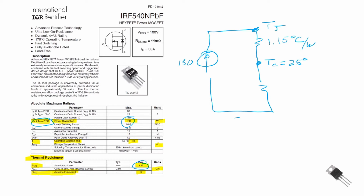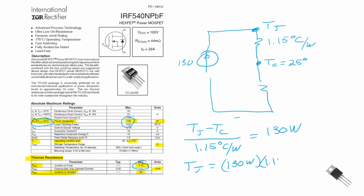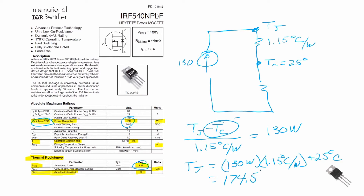We can solve this equation. We see that the temperature in the junction minus the temperature in the case, divided by the thermal resistivity from the junction to the case, is equal to 130 watts. We can solve for the junction temperature: that will be 130 watts times 1.15 degrees centigrade per watt, plus the case temperature of 25 degrees C. When we solve this equation, we find that we end up with a junction temperature equal to 174.5 degrees centigrade, which is just under the specification for the device.